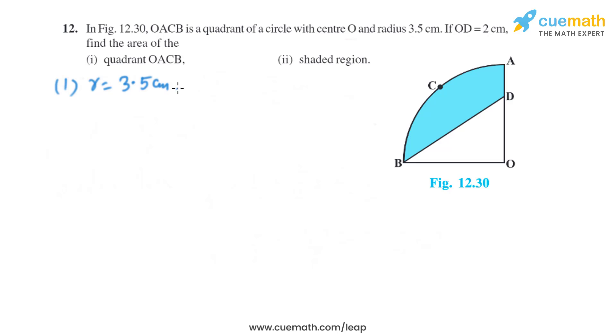The radius is given in the question as 3.5 cm, which is the same as 35 by 10, and on dividing it by 5 we will get 7 by 2 cm.